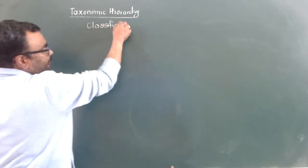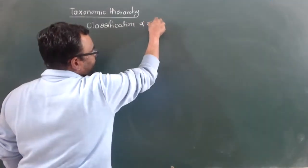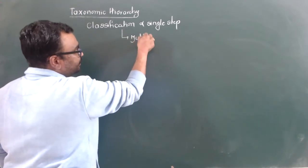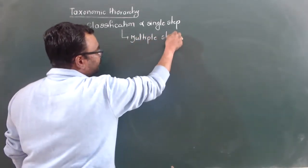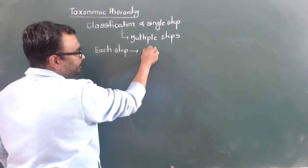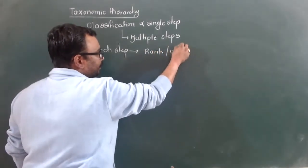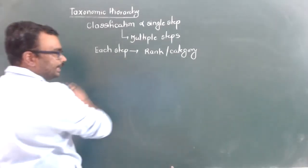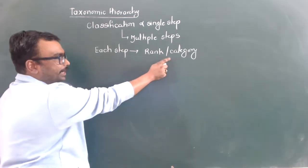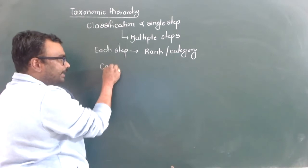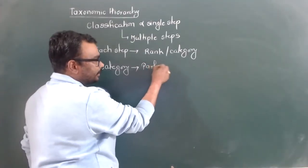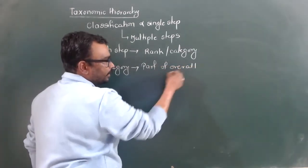The process of classification is not a single-step process; there are multiple steps involved. Each step is called a rank or category. Every step that is involved is called a rank or category, and that category is considered to be part of the overall taxonomic arrangement.